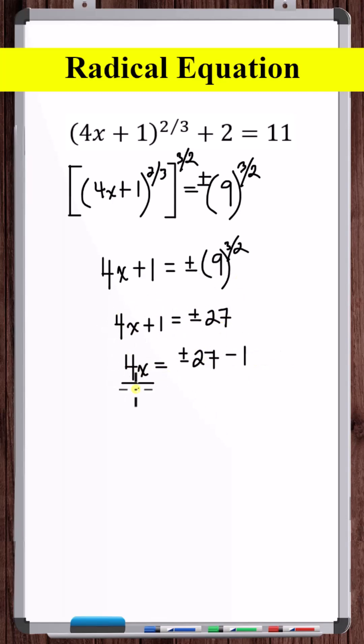Subtracting 1 from both sides, dividing both sides by 4. So we've got x is equal to minus 27. Minus 1 is minus 28. Minus 28 divided by 4 is minus 7.